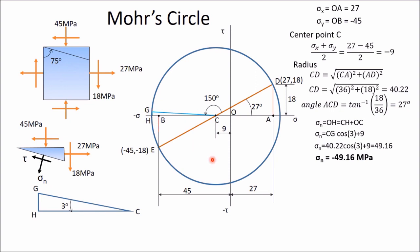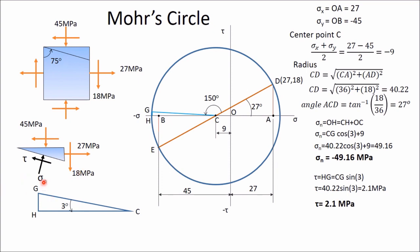The shear stress tau equals HG = CG·sin(3°) = 40.22·sin(3°) ≈ 2.1 MPa. This is in the positive direction, meaning clockwise rotation with respect to any point inside the element, so tau is positive. However, sigma N is negative, meaning it is compressive, not tensile as initially assumed, so the direction must be corrected. Sigma N is compressive at 49.16 MPa. In this way, normal stress and shear stress in this inclined plane have been obtained.